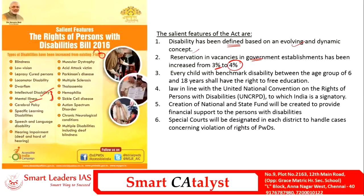The Indian government has widened Article 21A, which covers the right to free education, to include disabled children between the age group of 6 to 18 years, whereas for non-disabled people the right to free education applies only for ages 6 to 14. This Disabilities Act is also in line with the United Nations Convention on Rights of Persons with Disability, to which India is a signatory.